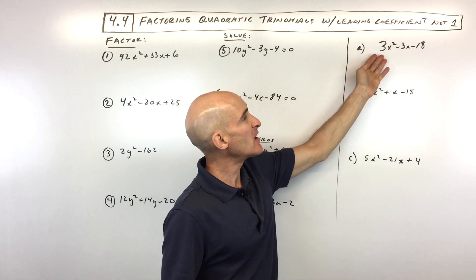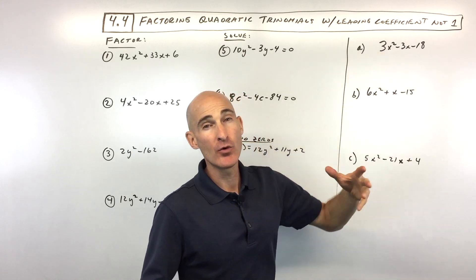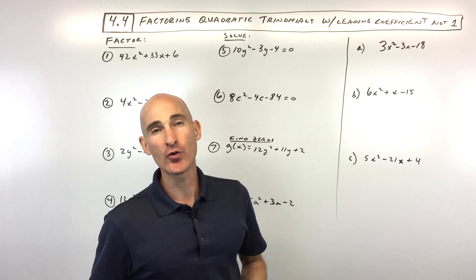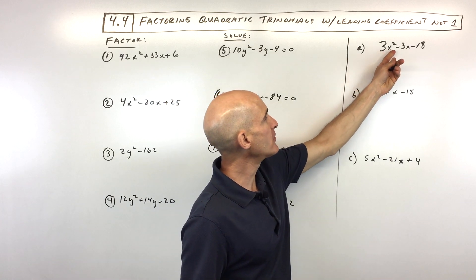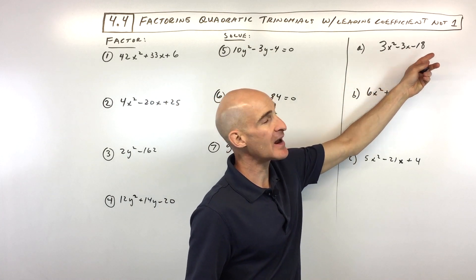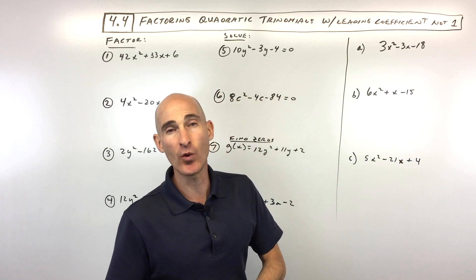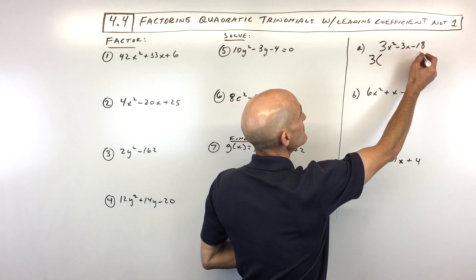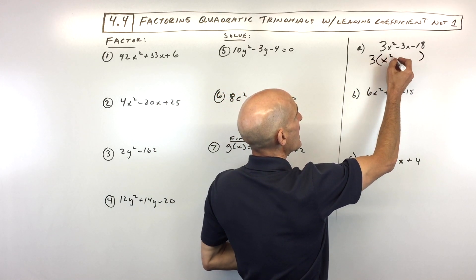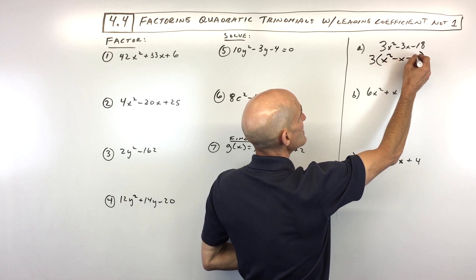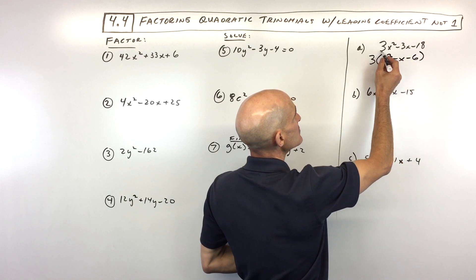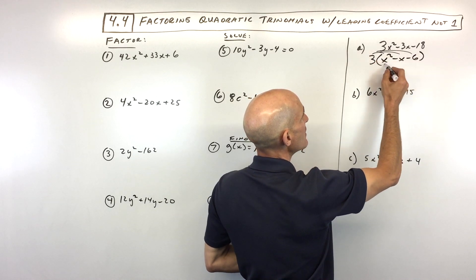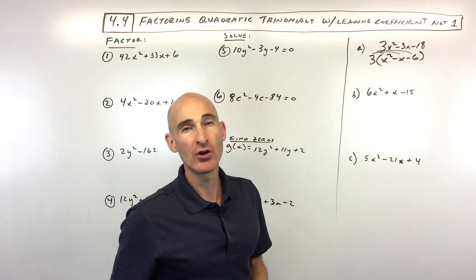The first thing you want to look at when you're doing factoring — the most important step, sometimes often skipped — is you want to make sure that you factor out the greatest common factor. You look at all the terms and say, is there something I can divide out of all these terms besides one? For this one, it looks like we can factor out a three, so dividing all these by three gives us x squared minus x minus six.